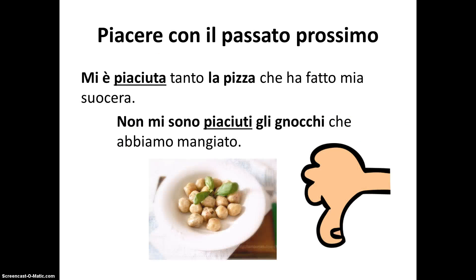Piacere can be conjugated in any tense using the same structure we saw in the previous slide. To use piacere in the passato prossimo you always use the auxiliary verb essere instead of avere. Mi è piaciuta tanto la pizza che ha fatto mia suocera. Non mi sono piaciuti gli gnocchi che abbiamo mangiato. Notice that piacere has to agree with the subject — that which is pleasing — as is always true for past participles used with essere in the passato prossimo. Piaciuta, feminine singular, agrees with the subject pizza. Piaciuti in the second sentence is masculine plural and agrees with the subject gnocchi.